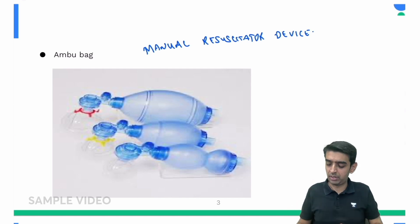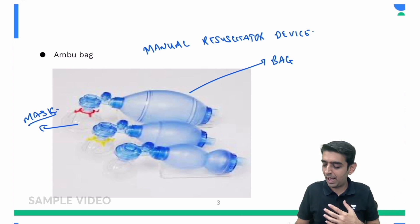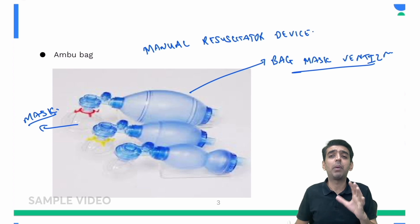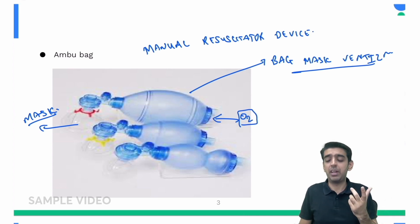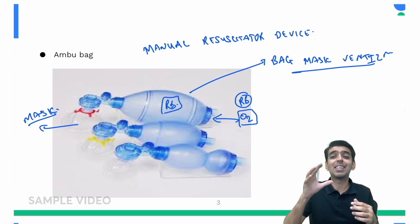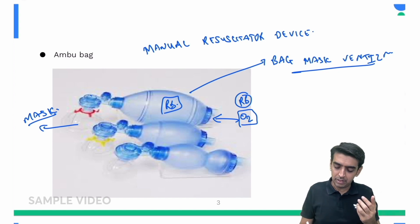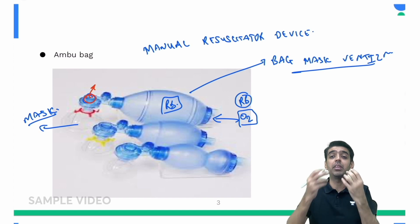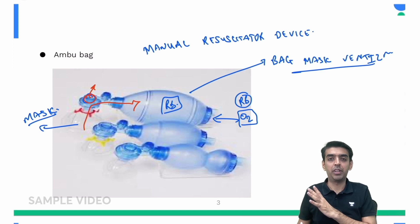As you can see, the manual resuscitator consists of a bag with a mask fitted on it, and it is also used for bag mask ventilation. From one end you can attach the oxygen tubing and reservoir bag. It is a self-inflating bag — once you press and release it, it inflates on its own. It also has a unidirectional valve, also known as the fish mouth valve or Ruben's valve, so expired air goes directly back to the atmosphere and does not return to the reservoir bag.